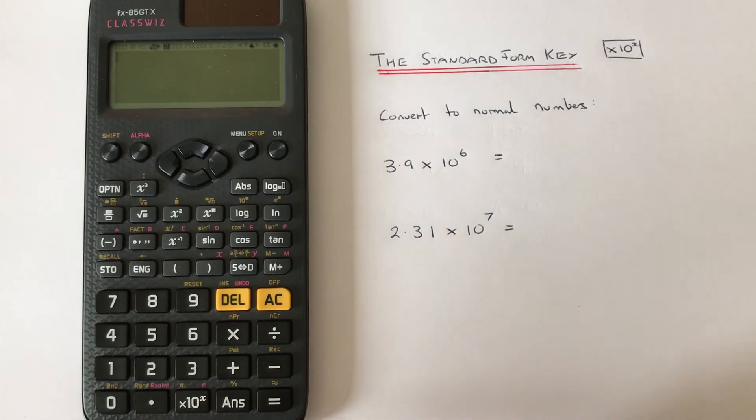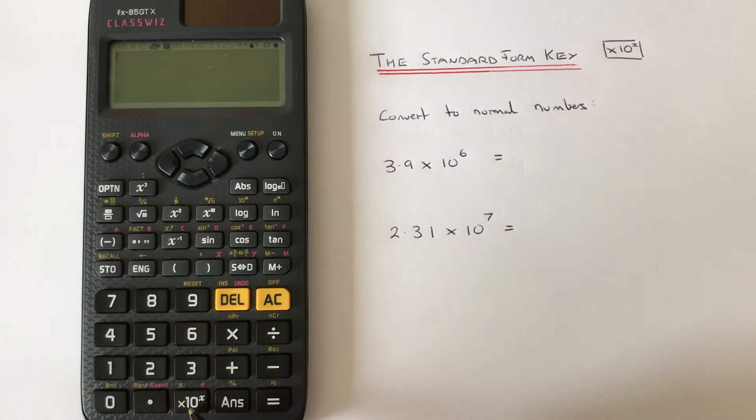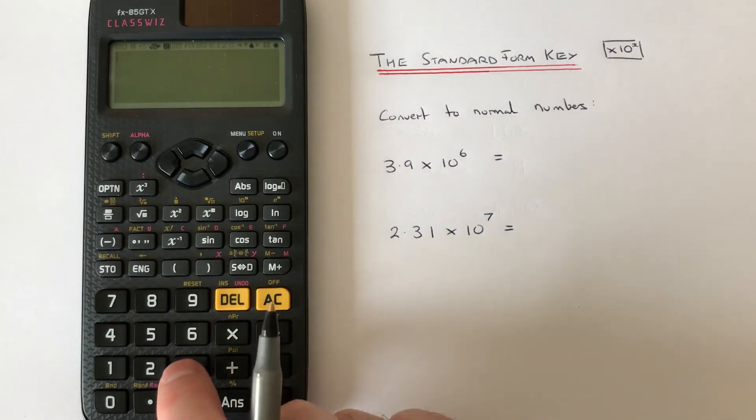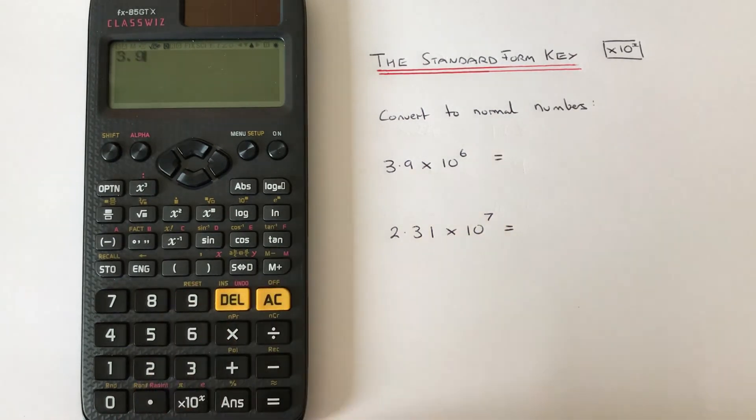The standard form key is located at the bottom of the calculator - it's the times 10 to the power of x key here. Let's look at the first example: 3.9 times 10 to the power of 6. We have 3.9, then press the times 10 key, then press 6.